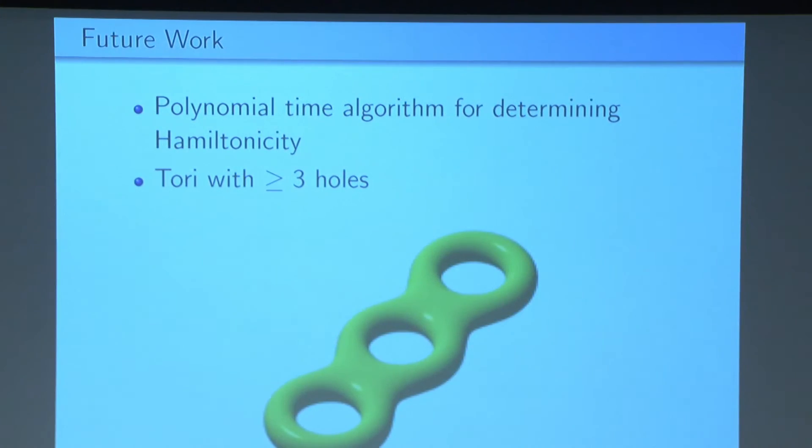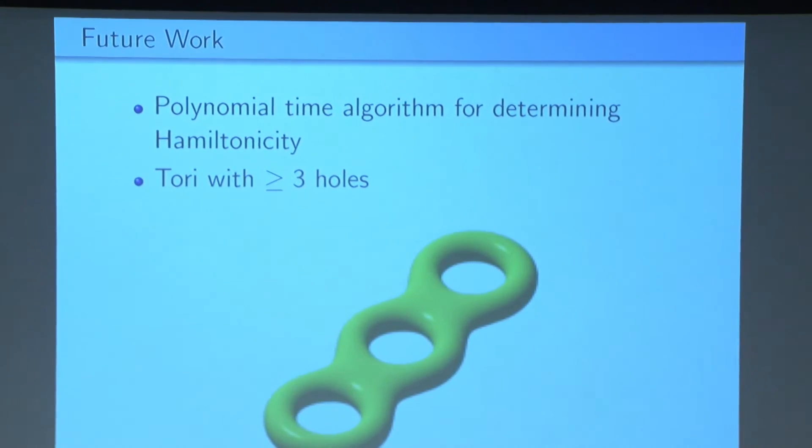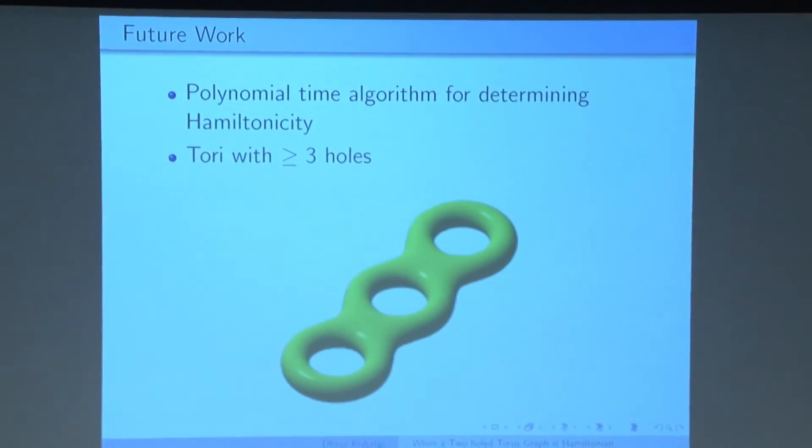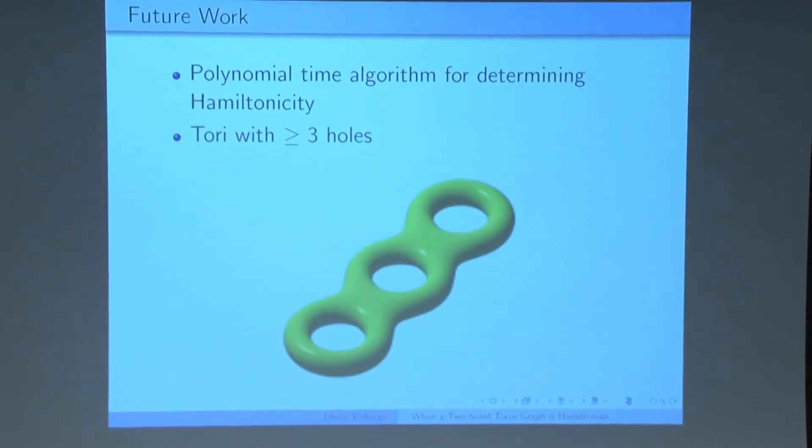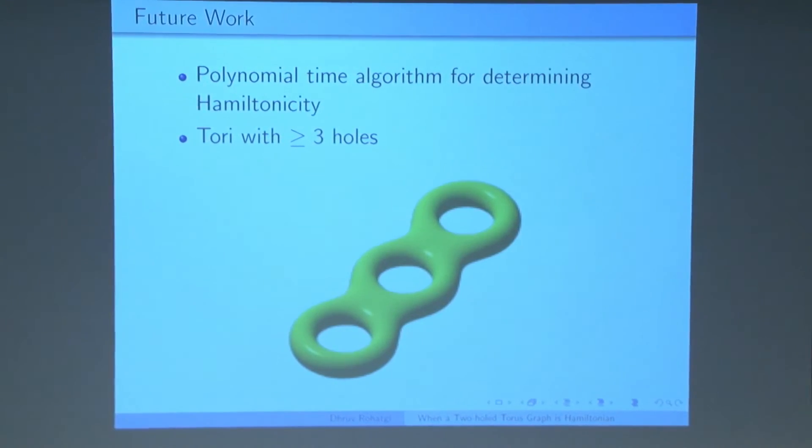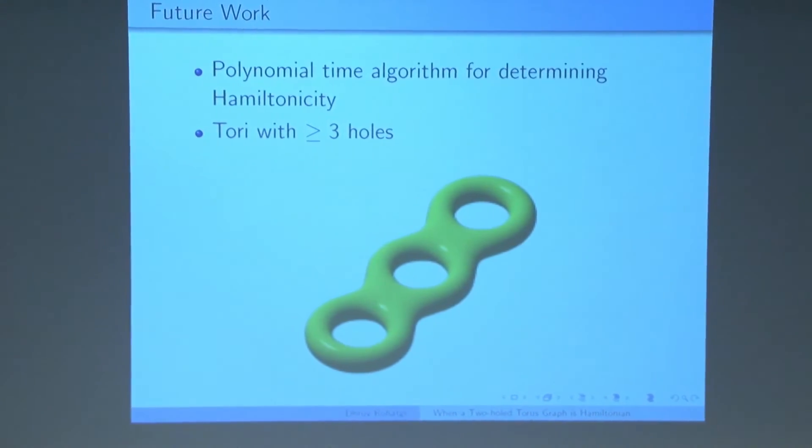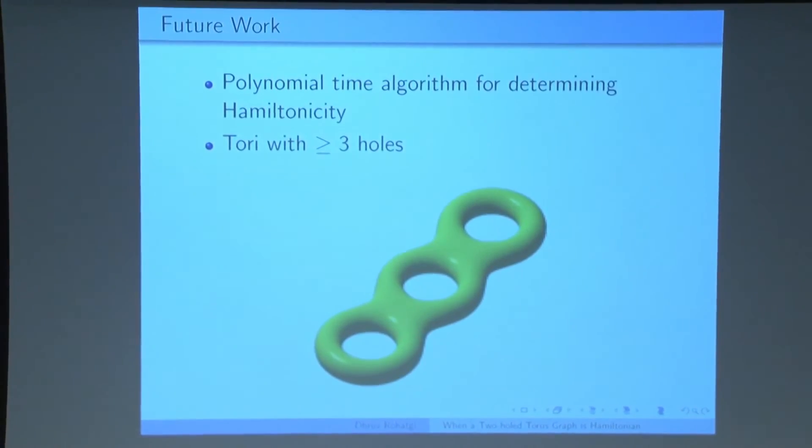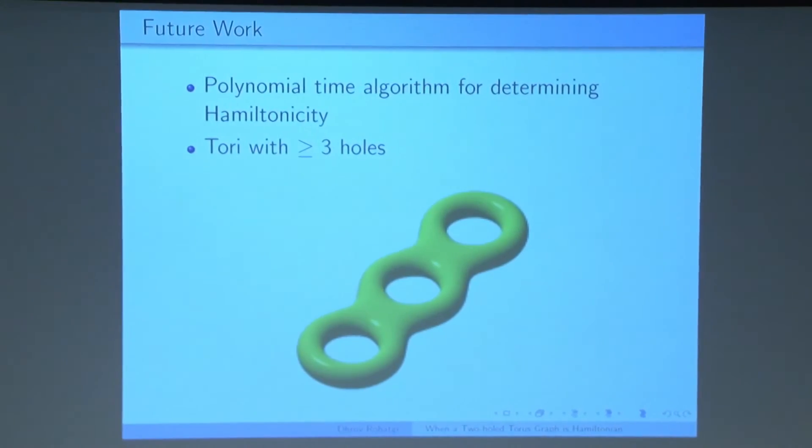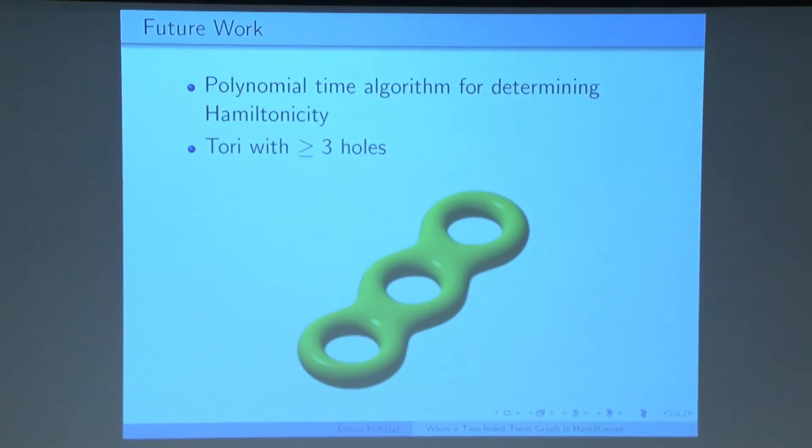In the future, it would be interesting to see a polynomial time algorithm for determining which checkerboards are Hamiltonian. The fact that we have a polynomial time algorithm for finding the number of diagonals suggests that this might be possible because they are closely related problems. Furthermore, it would be interesting to see if we can extend these results to three-hole torus checkerboards, four-hole torus checkerboards, and so forth.